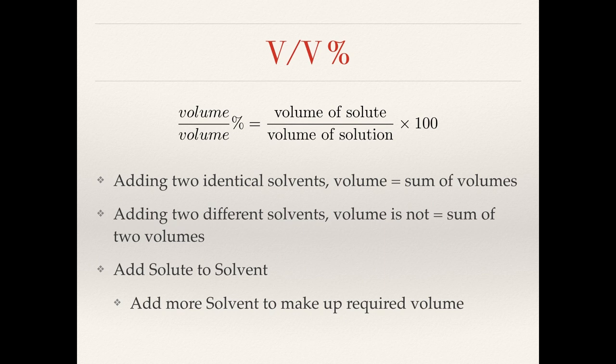Volume-to-volume percentage solutions are more commonly encountered when you've got two liquids and you need to mix them. In this case, it's most common to call the smaller volume of liquid the solute and the larger volume the solvent. But if you've got a 50% solution, there's no difference between the volume of solute or solvent, so it makes no difference — we just pick one to call the solvent. There are some unexpected catches when making up volume-to-volume solutions, due to the interaction between the molecules of the solvent and the solute.